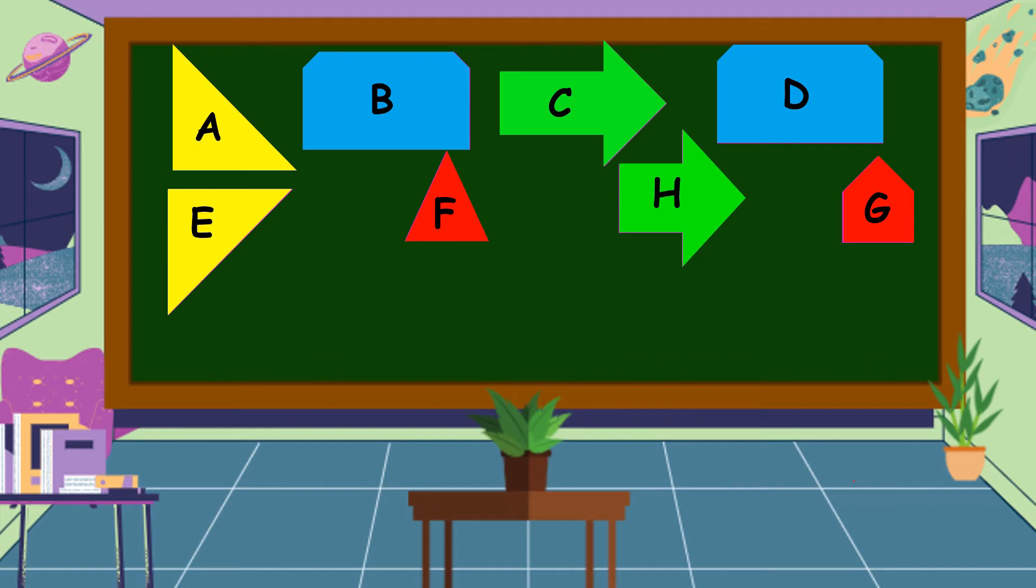Therefore, polygons A and E are congruent polygons as well as polygons B and D. When we say congruent polygons, they are polygons with the same shape and size.